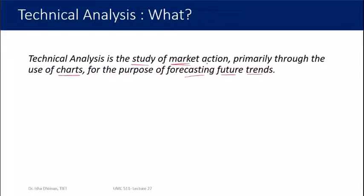We should be clear about the meaning of market action. The phrase 'primarily through the use of charts' explains how we do it, and 'for the purpose of forecasting future trends' explains why we do it. So one definition includes all three answers: what, why, and how. Now let's understand the meaning of market action.